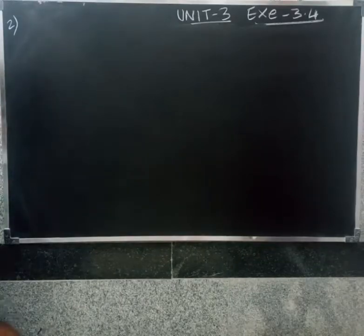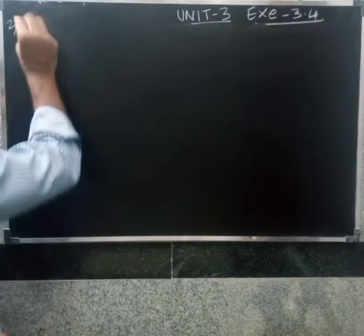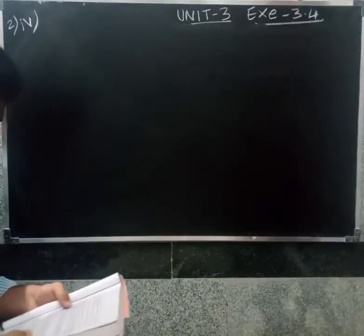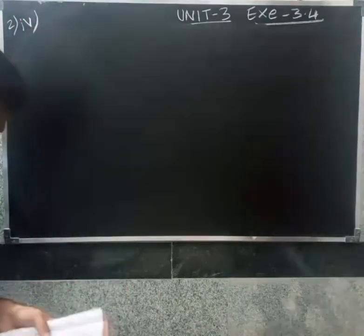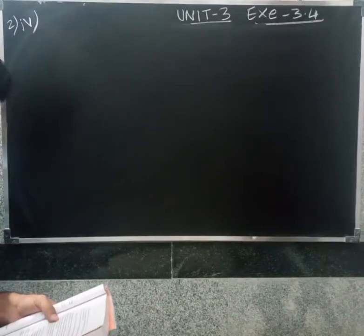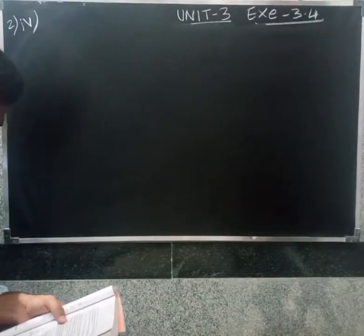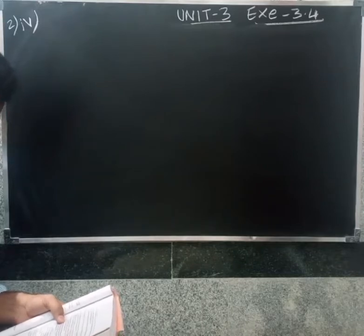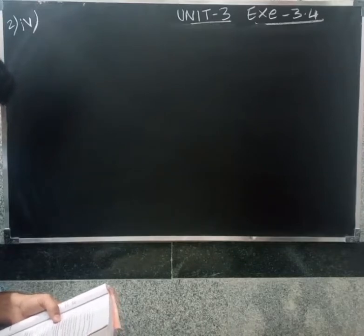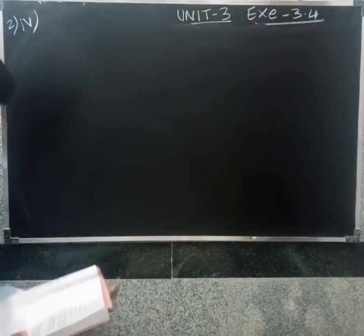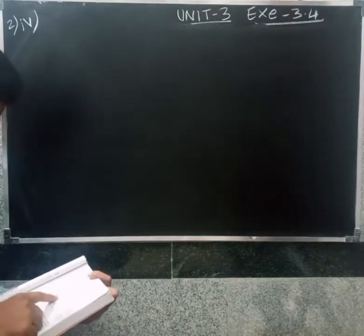Welcome friends. The second question: Meena went to withdraw rupees 2000. She asked the cashier to give her rupees 50 and 100 notes only. Meena got 25 notes in total. Find how many notes of rupees 50 and 100 she received.